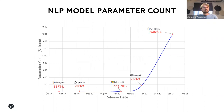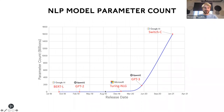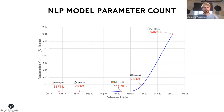For computer vision tasks, for example, you need more CPU compute to pre-process images and do data augmentation, whereas for NLP you don't need as much CPU compute. So you need flexibility in how many CPUs you attach to one AI accelerator. In terms of model parameter growth, about a year and a half ago OpenAI introduced GPT-3 with 175 billion parameters, and more recently Google introduced Switch-C with 1.6 trillion model parameters — this growth continues.